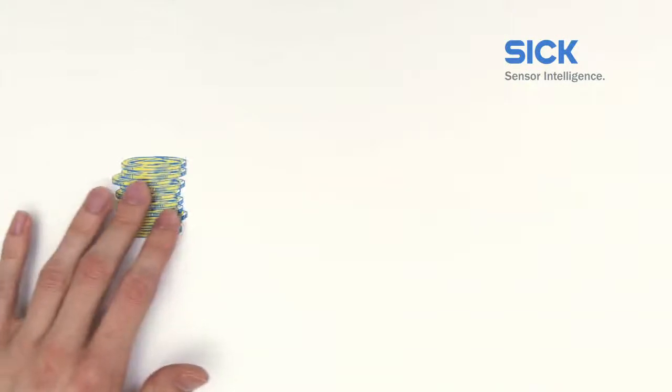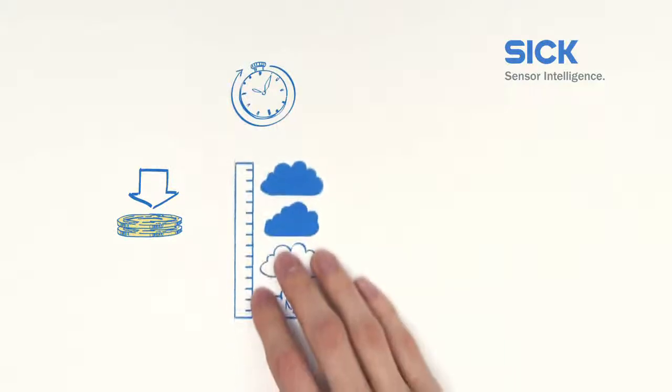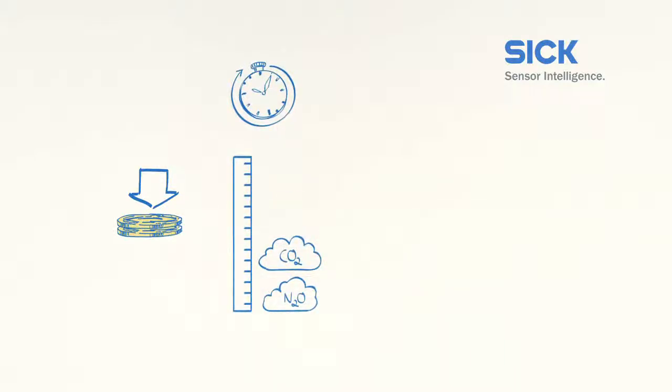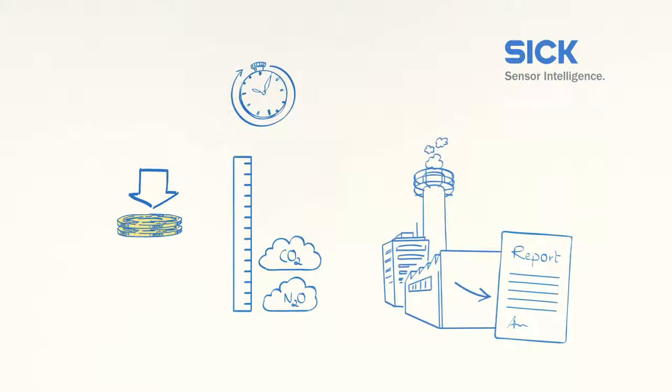GHG Control saves you money in three ways. Less acquisition effort. Safety margins are not required, as they are for the calculation method. And only the greenhouse gas loads actually emitted are reported and paid for. This makes this solution ideal for companies under disclosure obligation and for emission trading.